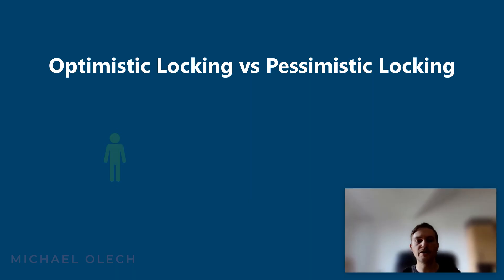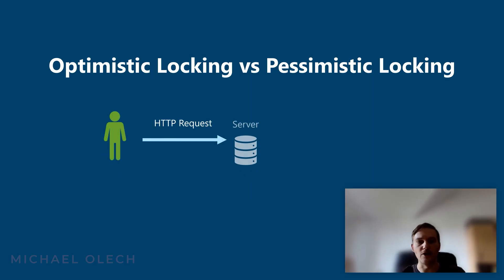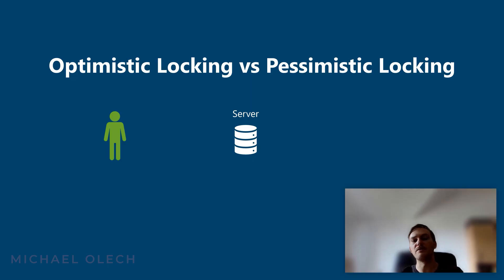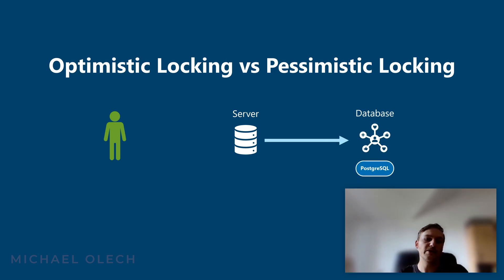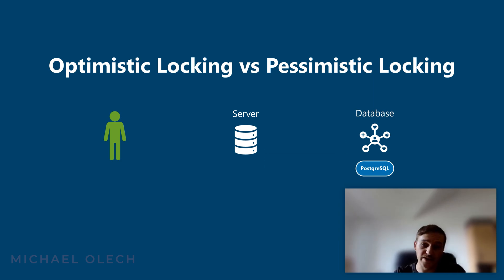A lock in PostgreSQL is like putting a do not disturb sign on a piece of data to prevent conflicts. This is the key to managing concurrency, which means having many users read and write to the database at the same time. At its core, a lock is a mechanism that PostgreSQL uses to control concurrent access to data. Think of it as a talking stick for database records — only the transaction holding the stick, the lock for a specific piece of data, is allowed to perform certain actions on it.